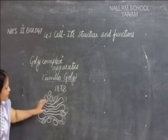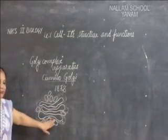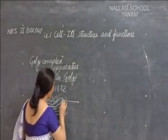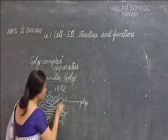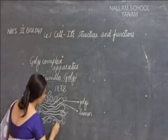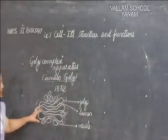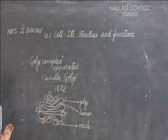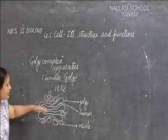To understand the complexity of the Golgi apparatus, we need to understand these vesicles. This is the Golgi body, and inside this part is the lumen of it. And this is the vesicle. It looks like a stack-like structure — stacks are stacked one upon the other.